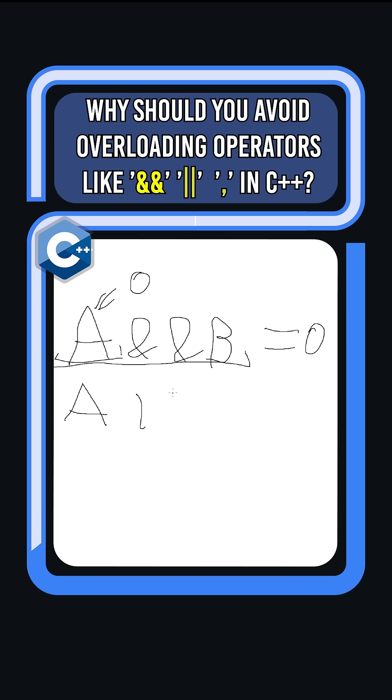Same goes for OR operator (||), where if A is true, then we also know the result, which will be true, because the condition of OR operator has been already met, and we don't need to evaluate B.